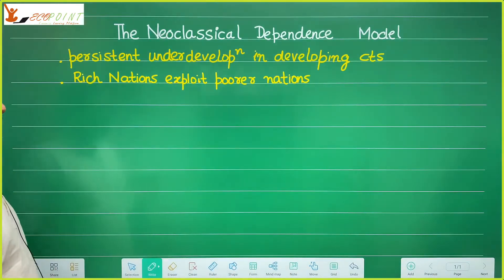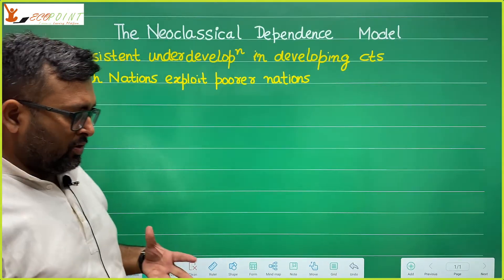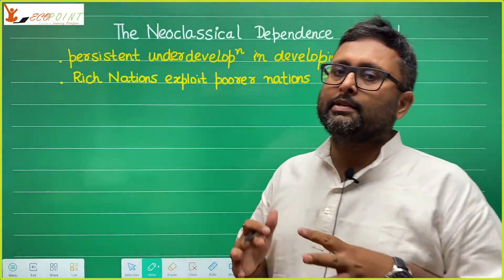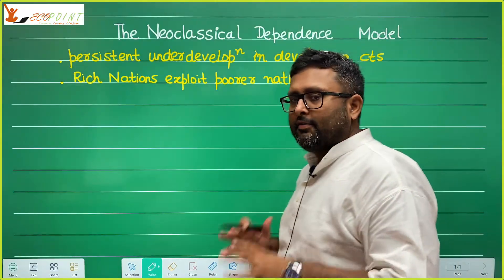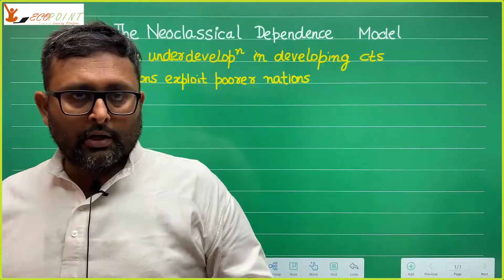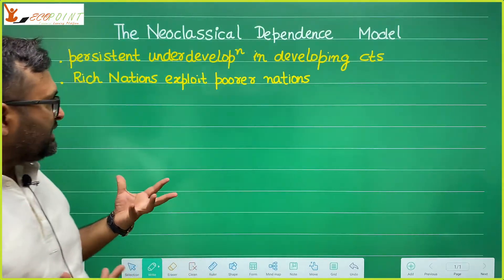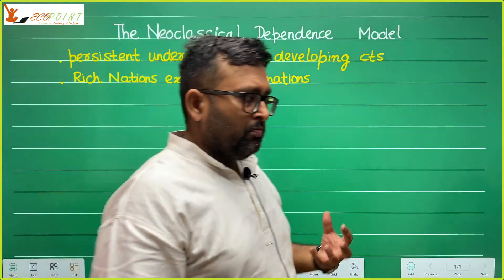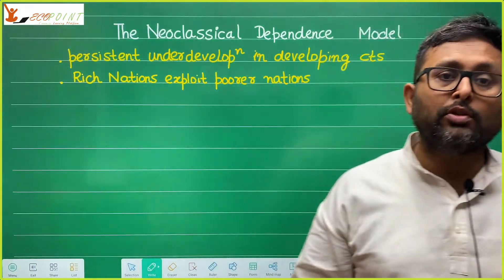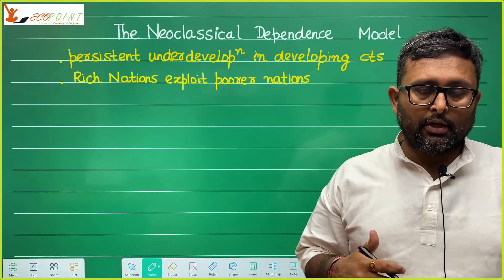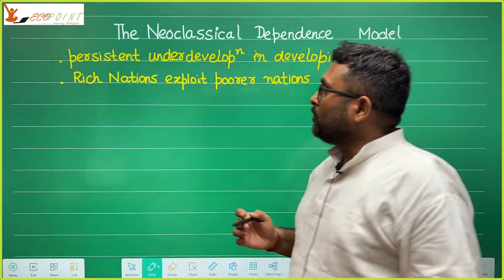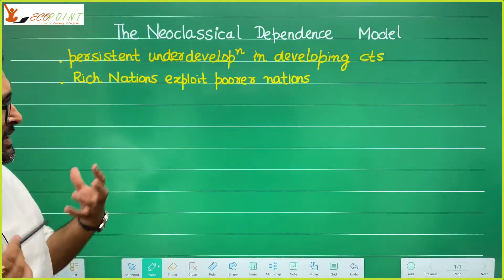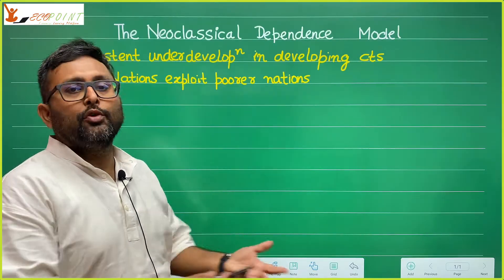The neoclassical independence model is based on Marxist thinking that there is persistent exploitation and persistent underdevelopment of developing countries. According to this model, rich nations exploit poor nations. The development experience is based on the historical evolution of these developing countries, and there is persistent underdevelopment in developing countries.